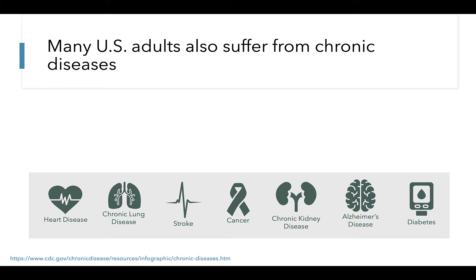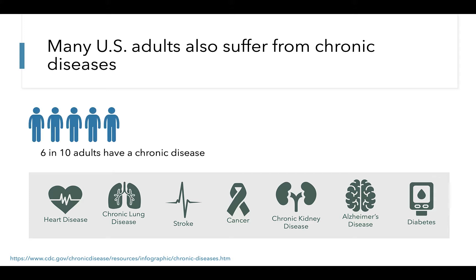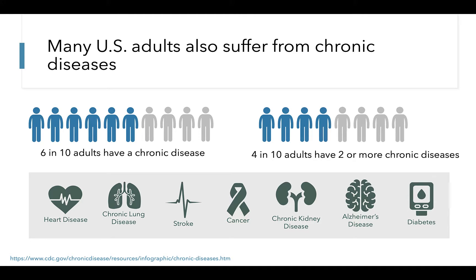We know that obesity increases risk for metabolic and other chronic diseases, such as heart disease, chronic lung disease, stroke, cancer, chronic kidney disease, Alzheimer's disease, and diabetes. We've seen increases in the prevalence of these chronic conditions over the past few decades, which echo the increases we've seen in BMI and obesity prevalence. In particular, the most recent data illustrate that 6 in 10 adults have at least one of these chronic diseases, and 4 in 10 adults have two or more of these chronic diseases.